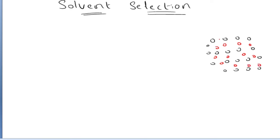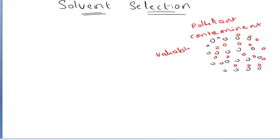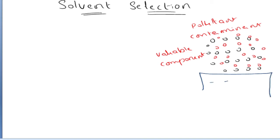The red colour particles denote the solute, which can be a pollutant, contaminant, or valuable component to be removed. You are interested in removing these red colour particles. For that, we take the help of the separation operation called absorption, for which we bring this gaseous mixture into contact with some liquid phase.